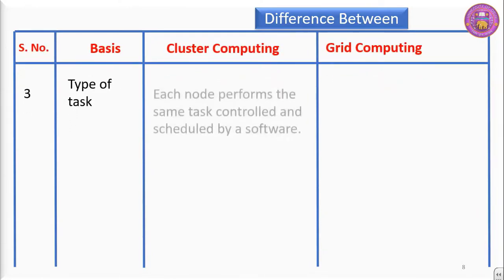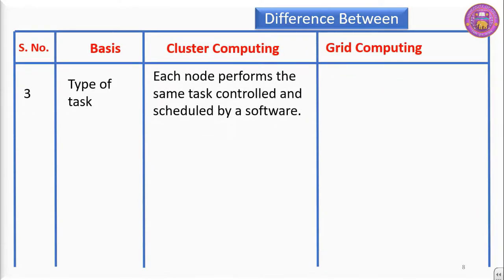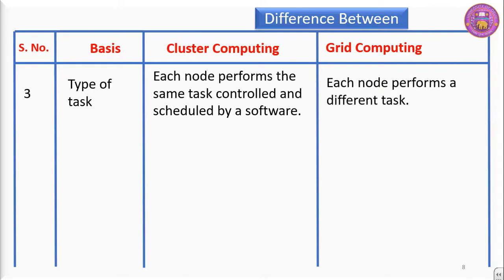Regarding type of task: in cluster computing, each node performs the same task, controlled and scheduled by software. Whereas in grid computing, every computer performs a different task.